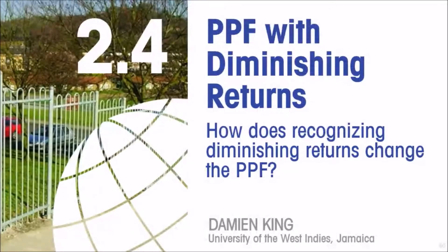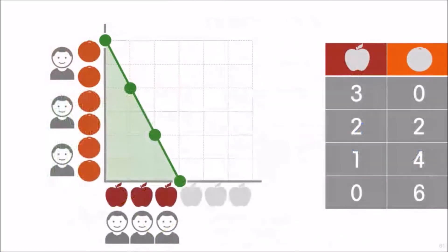We want to look at how the production possibilities frontier behaves differently — has a different shape — in the presence of diminishing returns. If each productive unit has the same productivity no matter how many of those productive units are employed in a particular industry, then we get a straight line production possibility frontier.